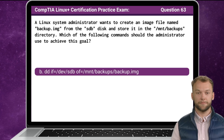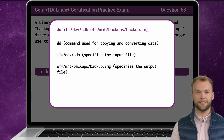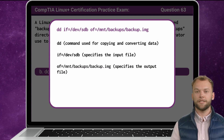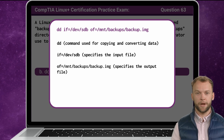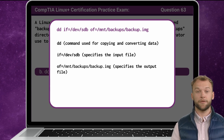The answer is B. The dd command is used for copying and converting data. This base command is followed by the options if=/dev/sdb and of=/mnt/backups/backup.img. The if option specifies the input file, denoting the source disk from which data will be copied. In this case, /dev/sdb represents the source disk.